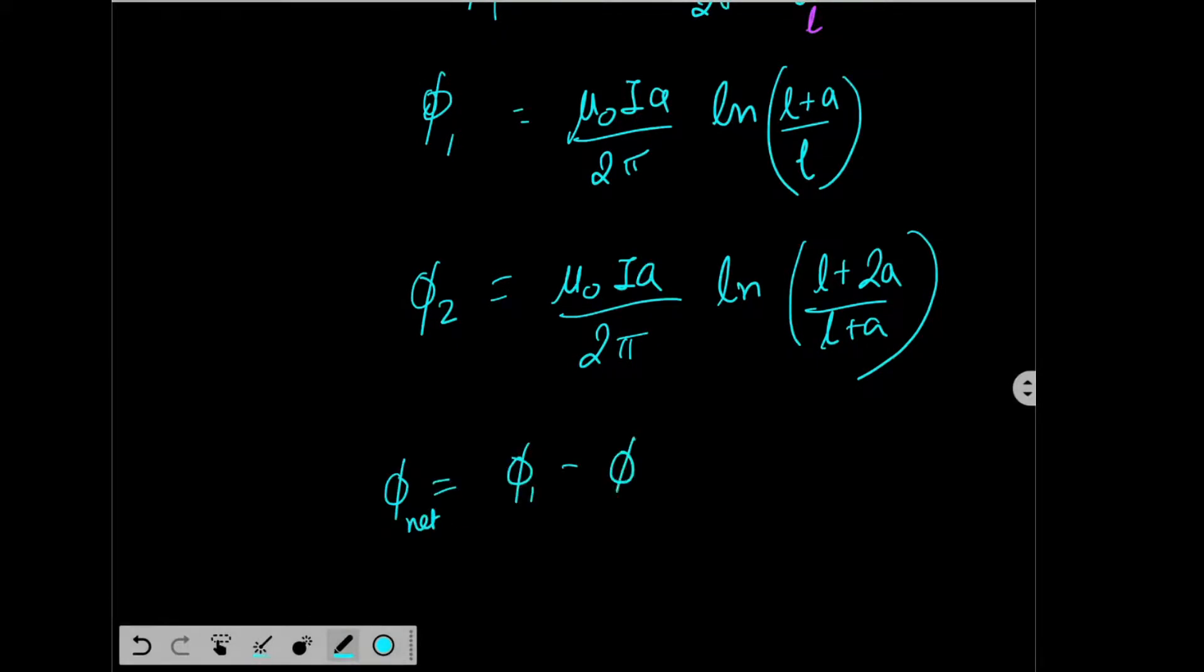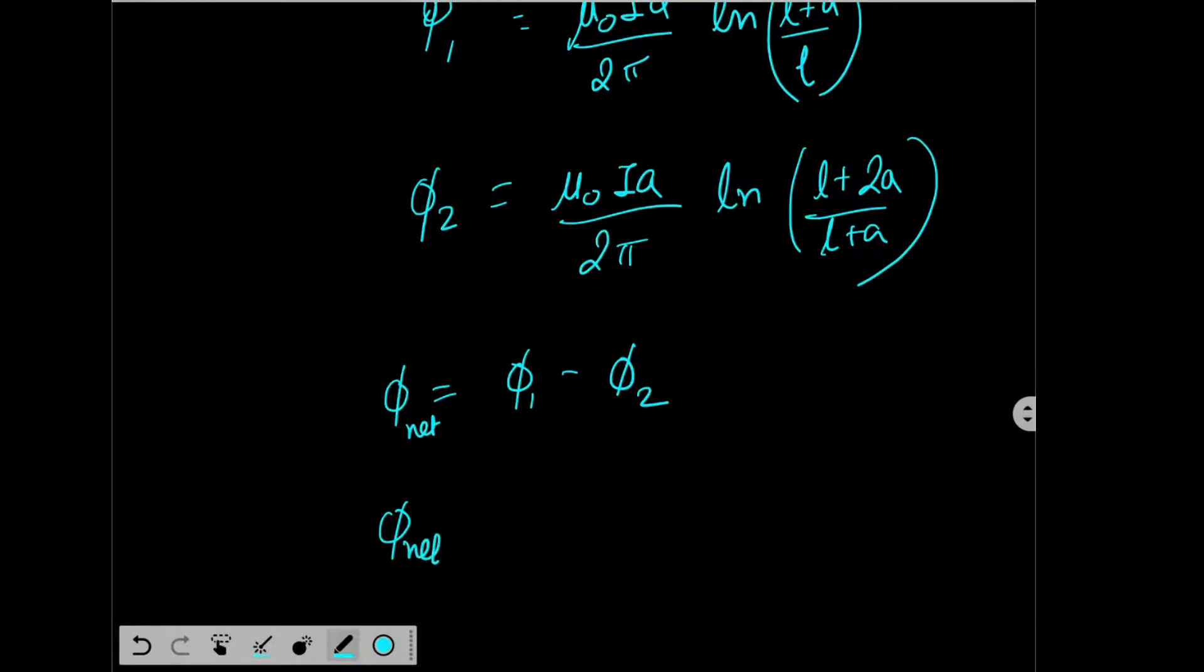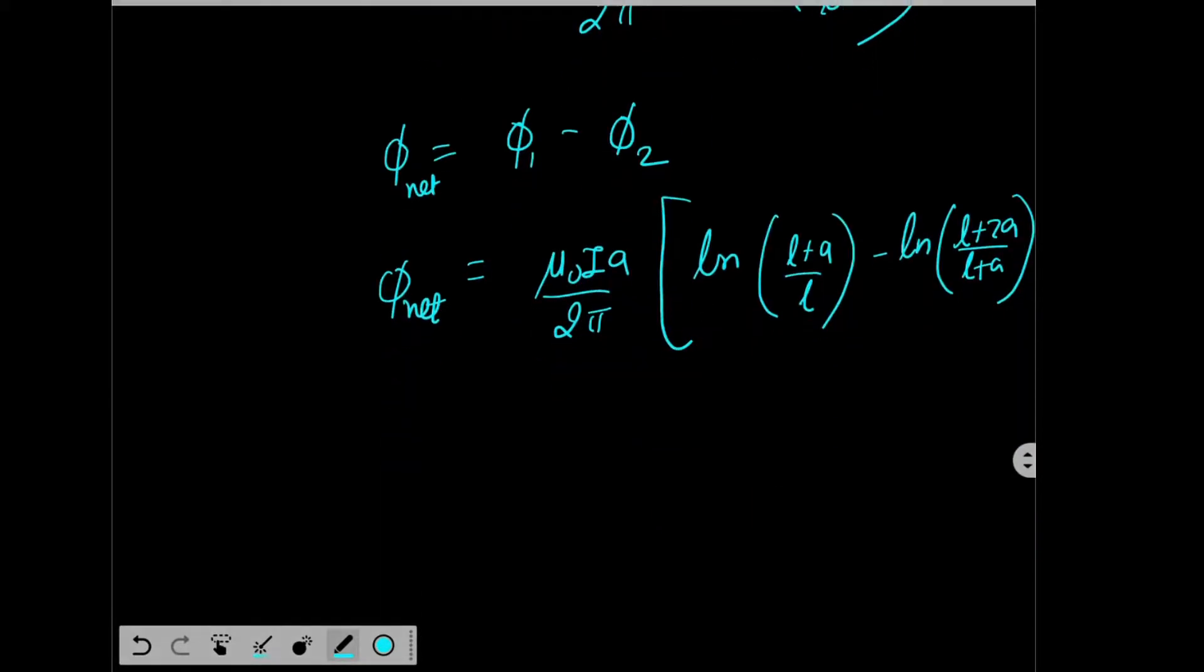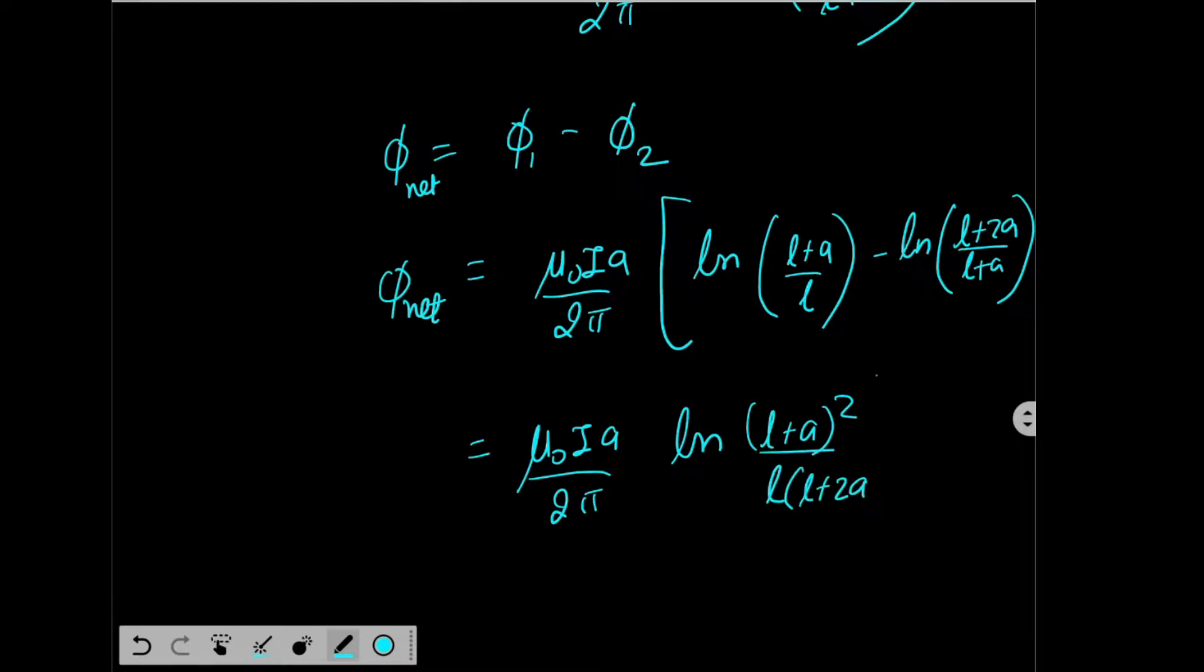So my net flux will be phi 1 minus phi 2. So phi net will be Mu0 IA by 2 pi, log L plus A by L minus log L plus 2A by L plus A. So I get this to be equal to Mu0 IA by 2 pi, logarithm L plus A whole square by L into L plus 2A. This is my net flux.